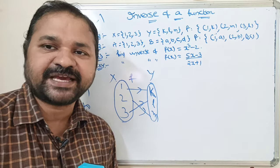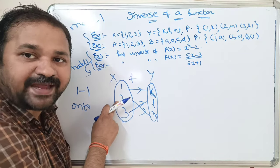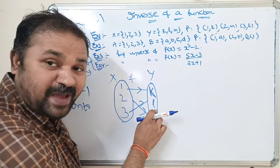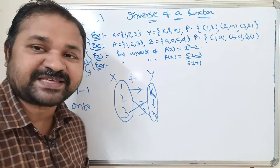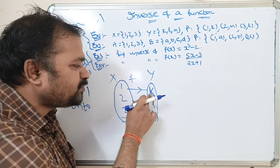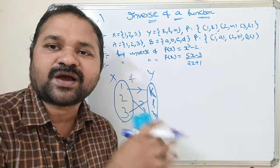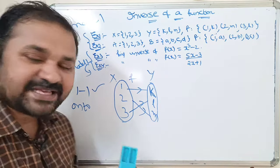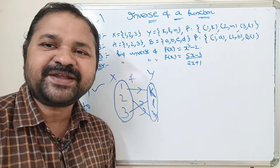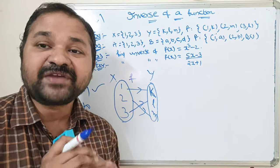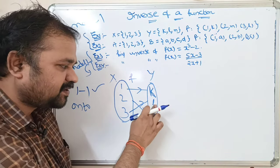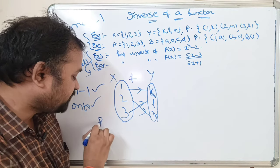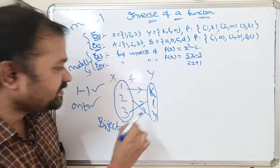One more condition: two elements in set X cannot have the same mapping in Y. Here 1 and 2 are not mapped to the same element, 2 and 3 are not mapped to the same element, and 3 and 1 are not mapped to the same element. So this is a one-to-one function. Every element of set B has a mapping, so this is also onto, making it a bijective function.